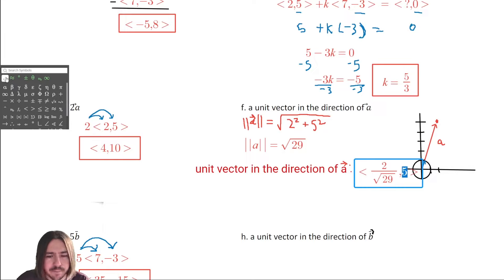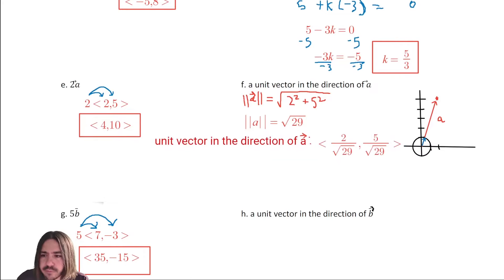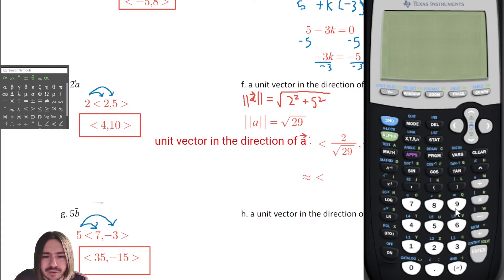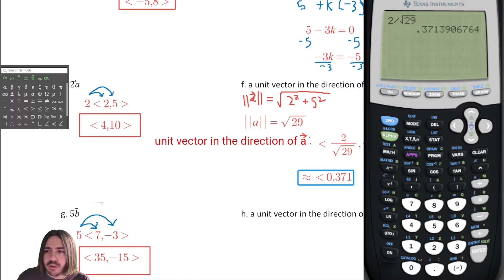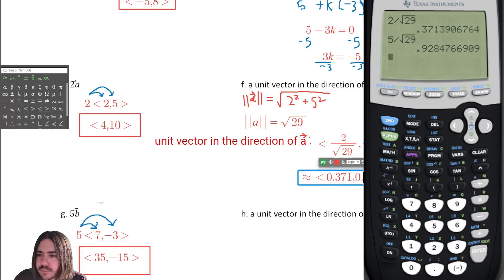If you wanted to estimate this, you'd put it in the calculator. Two divided by root twenty-nine gives about zero point three seven one, and five divided by root twenty-nine gives about zero point nine two eight. That would be the approximate unit vector. Whether I ask for the exact value or the rounded values depends on the problem.